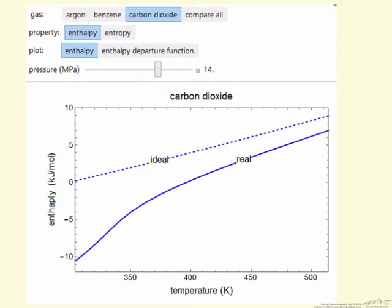If I select entropy, then this will change to entropy. I can change the pressure and look at the differences between the two. As the pressure gets higher, we expect the enthalpy, for example, to deviate more from the ideal gas. The only variable we can change with sliders is the pressure.